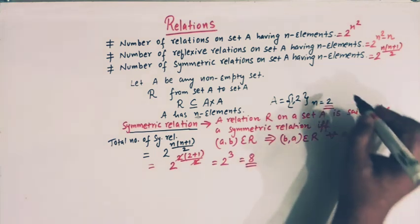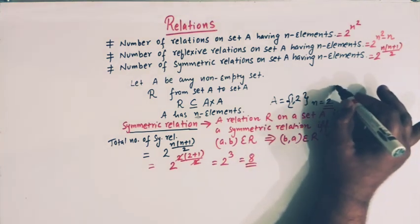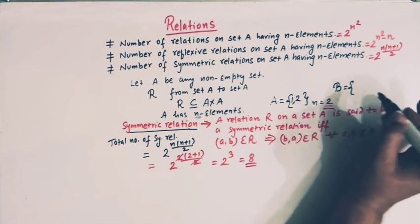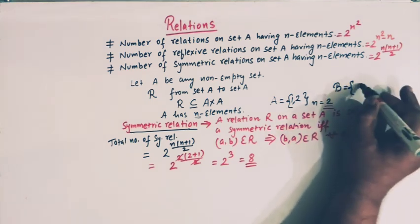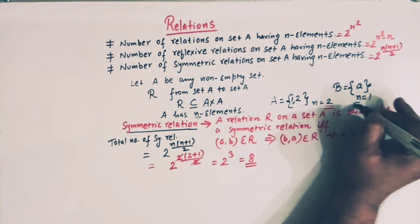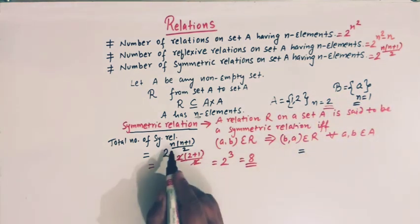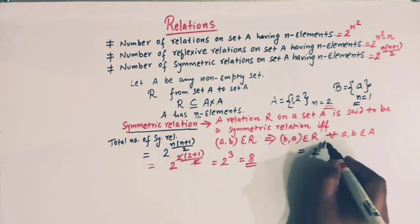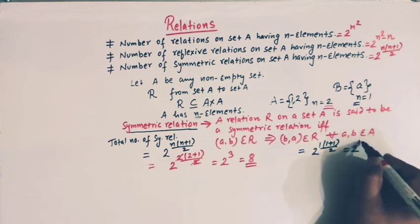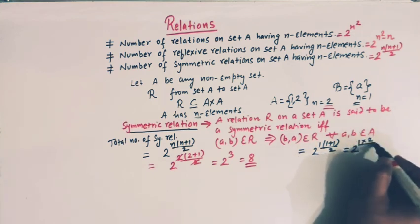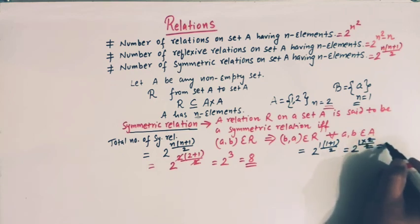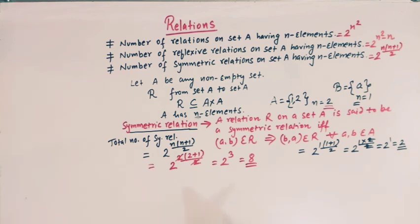Similarly, if we have a set B having only one element, then n is 1. The total number of symmetric relations is 2 raised to (1 times 2 divided by 2), which is 2 raised to 1, that is 2. So there are only two symmetric relations on this set B.